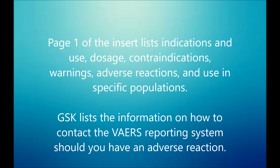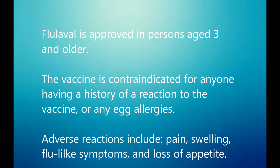Once you open up the vaccine insert, you'll see a lot of interesting information right off the start. Page one of the vaccine insert lists indications, use, dosage, contraindications, warnings, adverse effects, and what use it's supposed to have in specific populations. GlaxoSmithKline also lists information on how to contact the VAERS reporting system should you have an adverse reaction. This vaccine is approved for use in persons aged three and older, and is contraindicated for anyone with a history of reaction to the vaccine or egg allergies. Adverse reactions include pain, swelling, flu-like symptoms, and possibly loss of appetite.